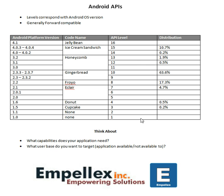Also think about the emulators. When you are developing applications, you can test in the emulator. So if we test in the emulator for API level 14, we are really testing for Android platform version 4.0 to 4.0.2.